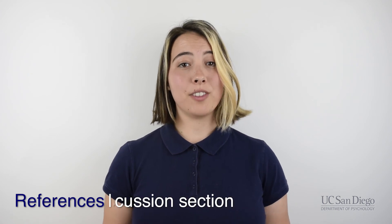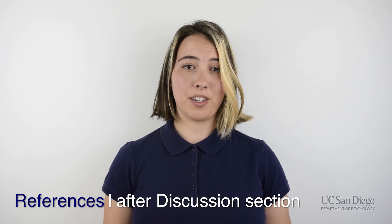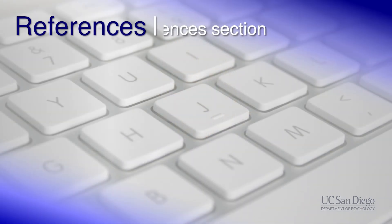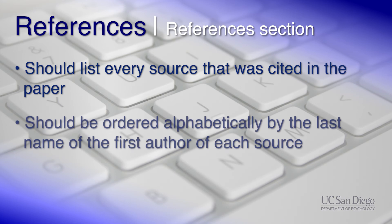Now on to references. The references section should be after the discussion section and before any tables and figures. This should be called 'references.' This section should contain a list of every source that you cited in your paper. However, that list should be ordered alphabetically by the last name of the first author of each source.